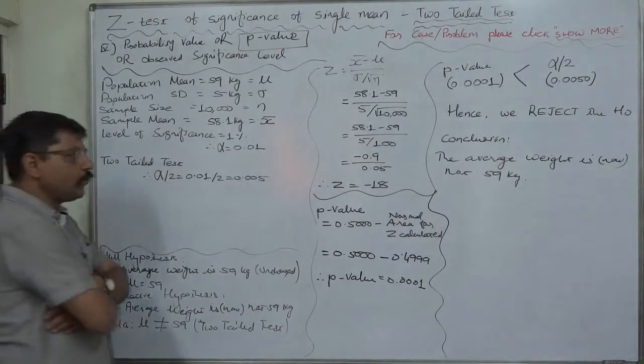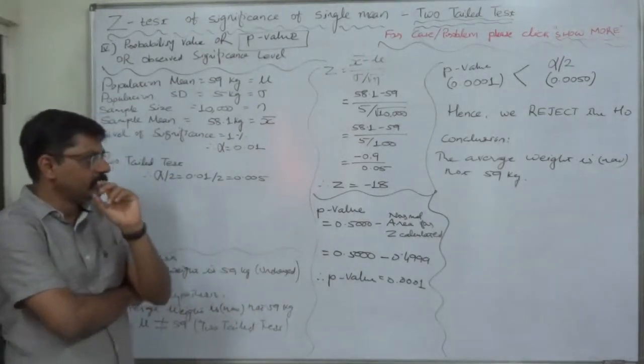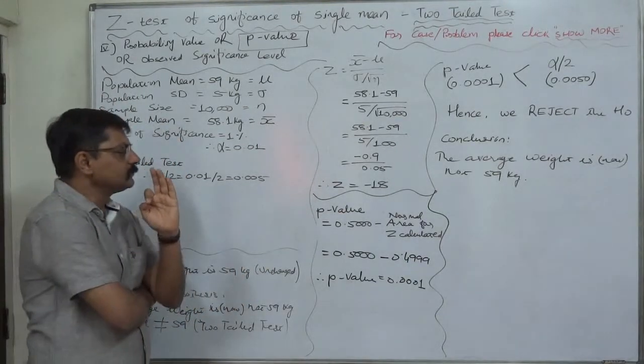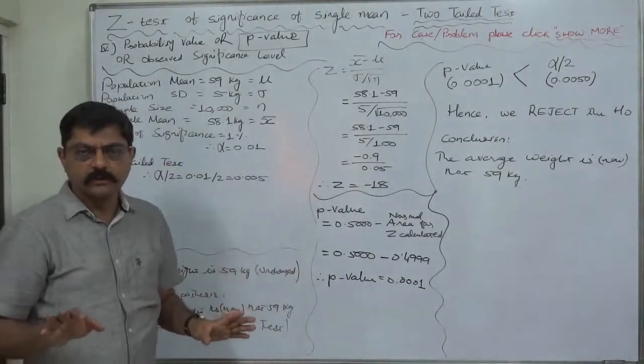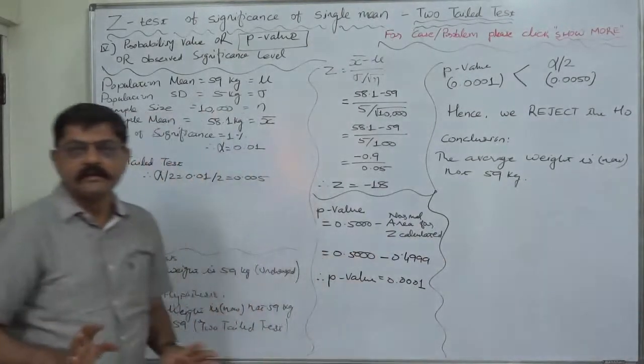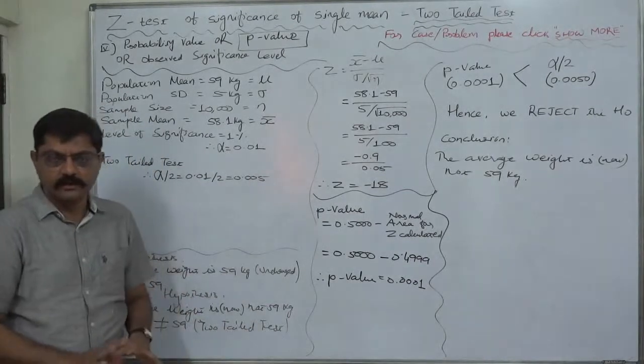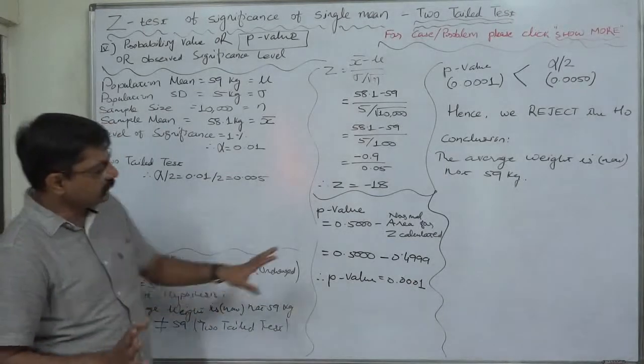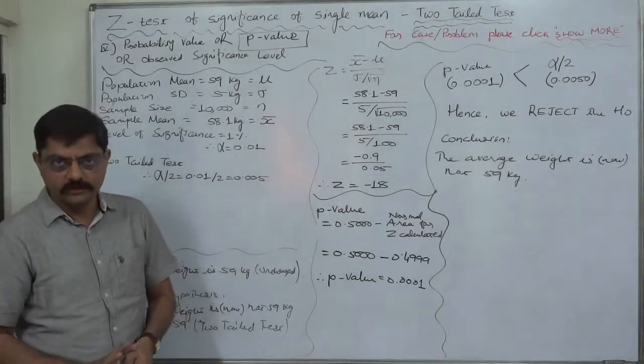But, those who are just beginners in case of testing of hypothesis or z-test whatever. For them, I first suggest that, first of all, try to learn and understand just how to calculate p-value and how to arrive at the conclusion. If you understand these things clearly, then you will be able to understand everything else about p-value etc. So, no need to hurry to know everything. First, try to accept the concept. Try to learn the calculations and arrive at the conclusion.